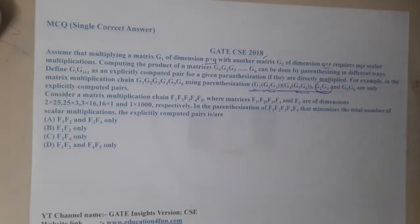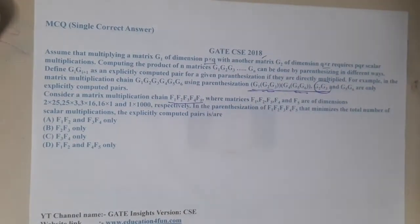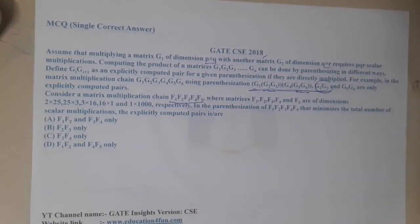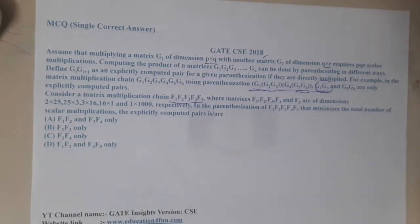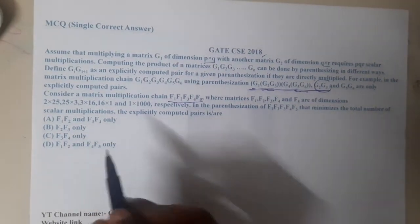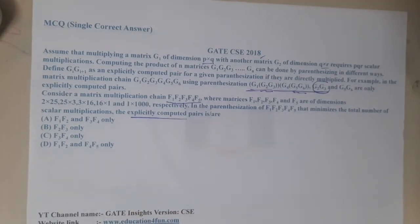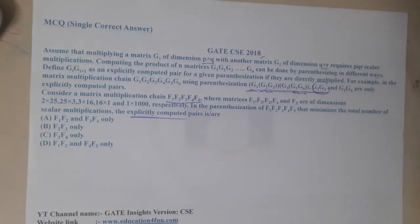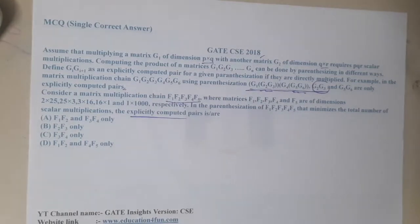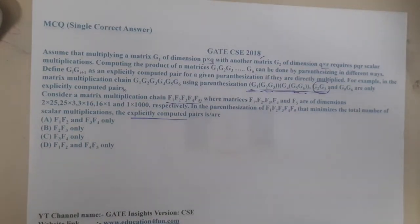Here they give five different matrices and ask which values will be explicitly computable. They are not asking for the total number of scalar multiplications — they are asking about the explicitly computed pair and its order rather than the direct value.